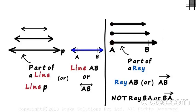But line AB can also be written as line BA. We just need to be careful when we are dealing with a ray.